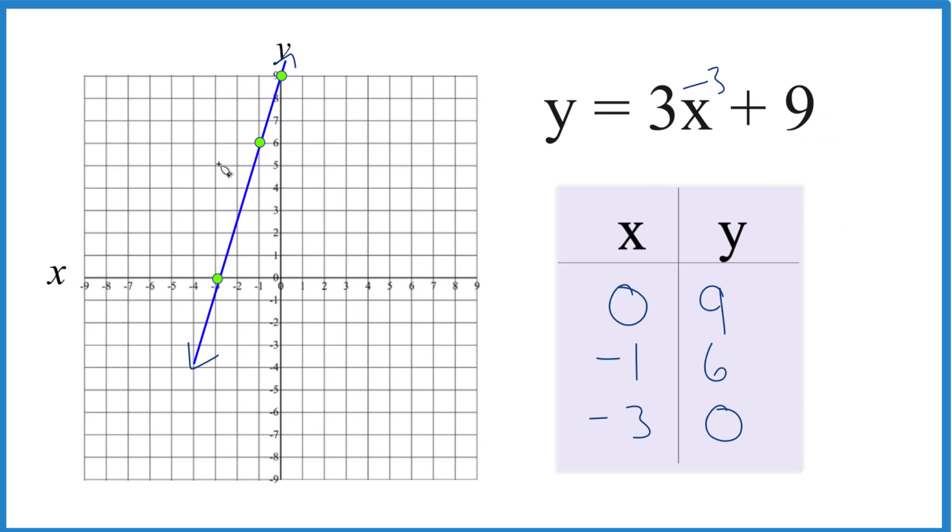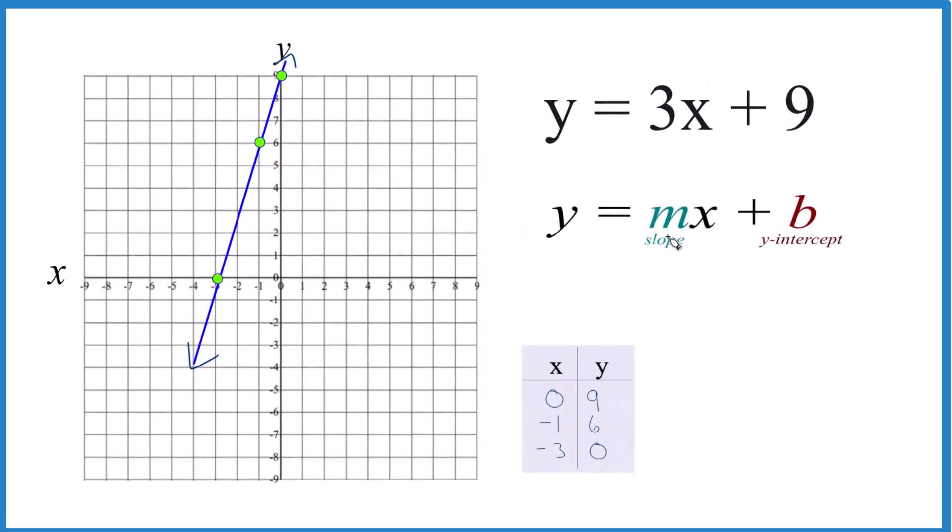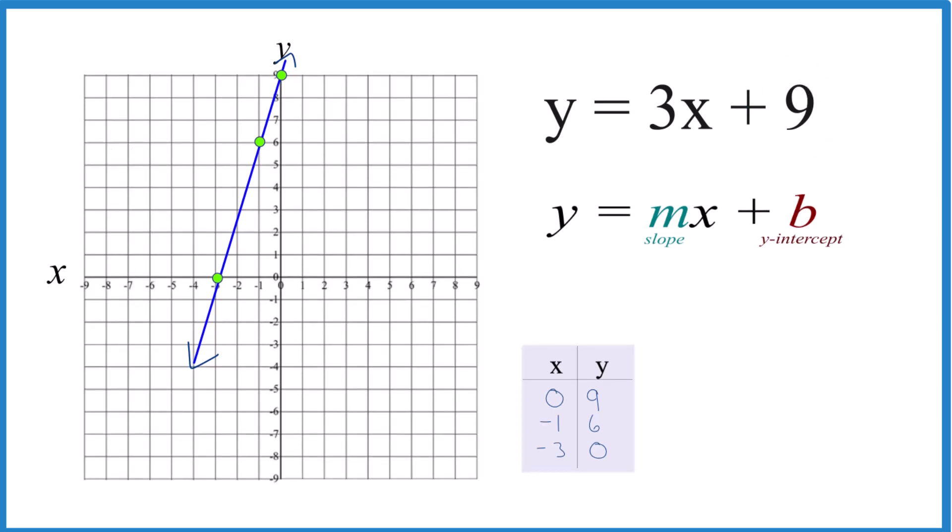Let's use slope-intercept form to graph this as well. It'll be the same graph, but it's kind of a nice way to do it. So we have y equals mx plus b. b, that's the y-intercept. That's where we go through the y-axis. And that is right here's the y-axis. We go to 9, and it's right there.